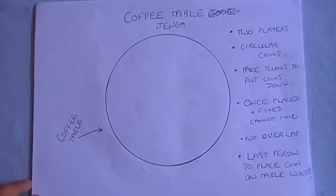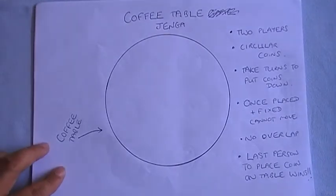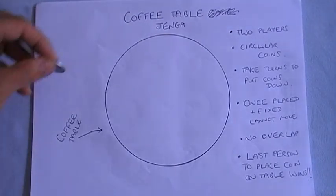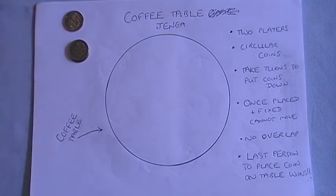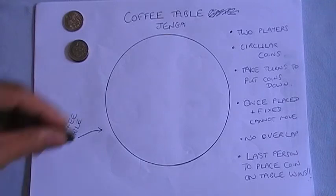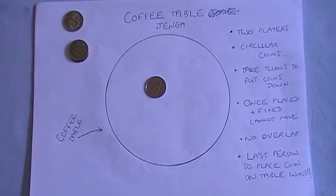So the idea of Coffee Table Jenga is that we've got a coffee table here and it's a circular coffee table, and there are two players and each player has access to some coins. In this case I've picked the very exotic Japanese 100 yen coin.